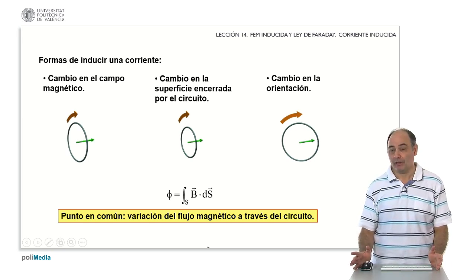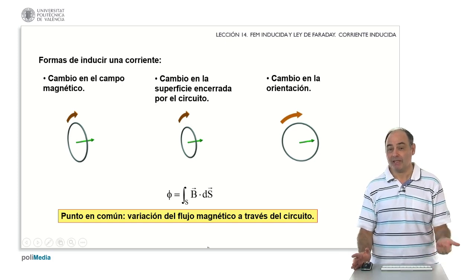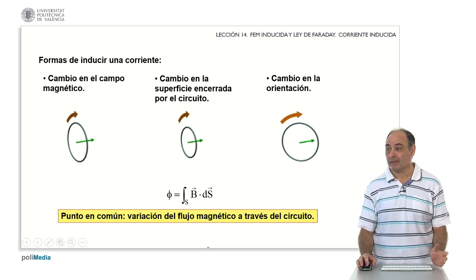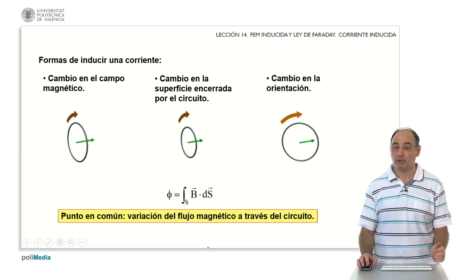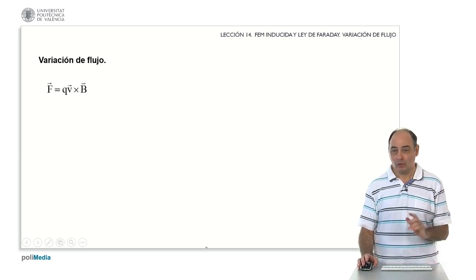The faster it changes, the more intense the induced current is going to be, and its direction is going to depend on whether that change has a positive or a negative sign. Well, all of this is what Mr. Faraday discovered, and he formulated it according to his law, which we will now examine.